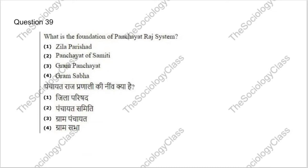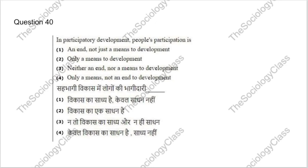Question 39: What is the foundation of the Panchayati Raj system? Panchayati Raj is a very important topic for social science students. The correct answer is D — Gram Sabha. Question 40: In participatory development, people's participation is — an end not just a means, only a means, neither end nor means, or only a means not an end? The correct answer is D — it is only a means and not an end to development.